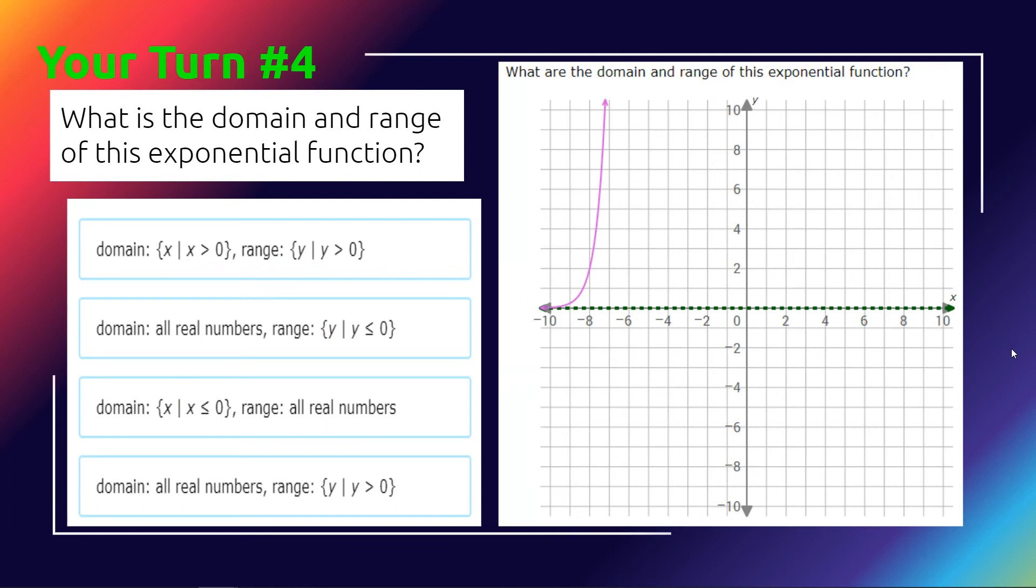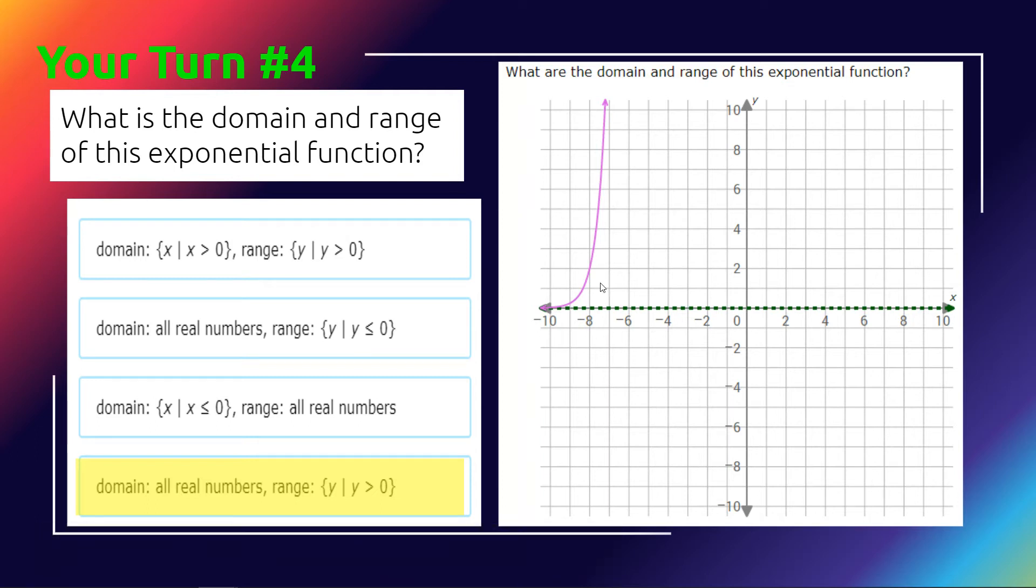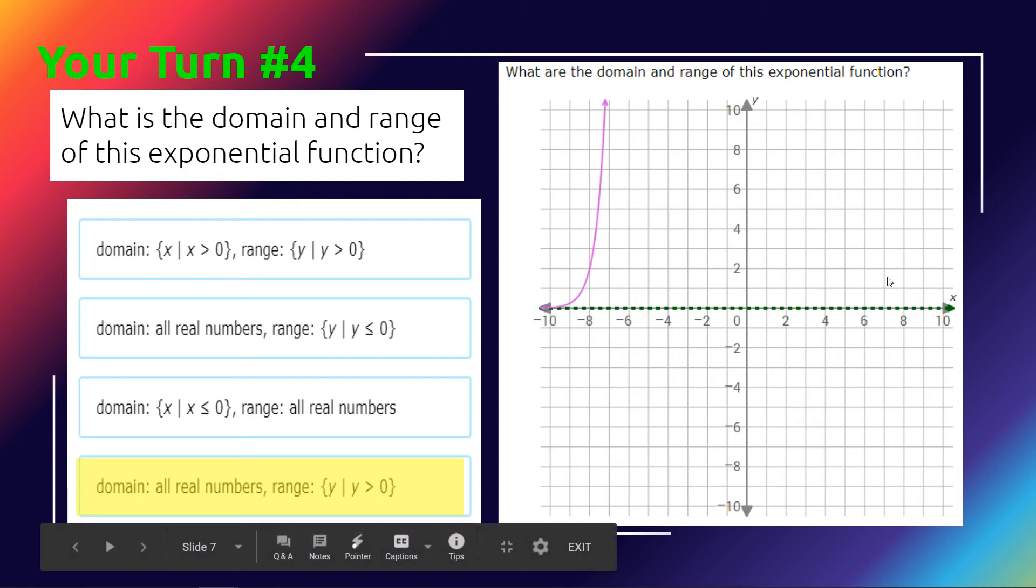What is the domain and range of this function? In this case, it is all real numbers, and the range is still greater than 0. Even though this has been moved to the left by quite a bit, the domain and range are not going to be changed. Because it didn't go up or down, the range doesn't change, and since it went left or right, the domain won't change because it's all real numbers.